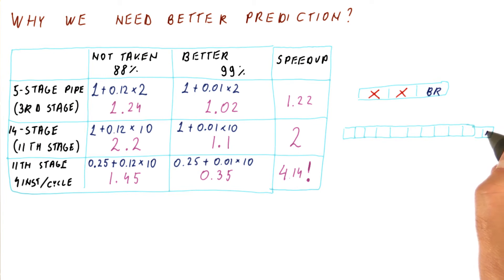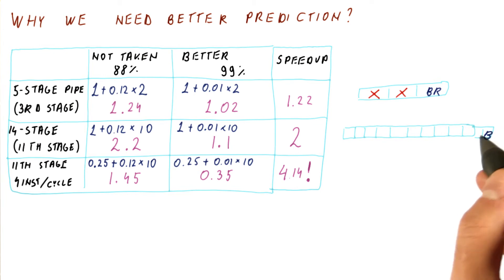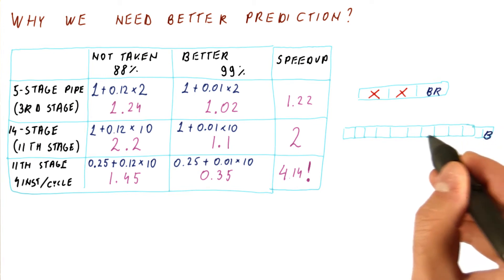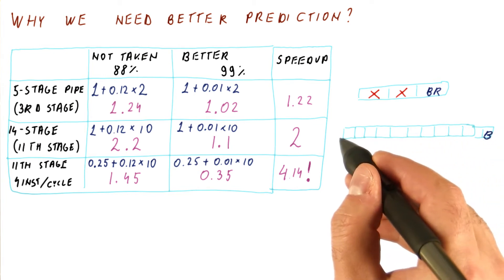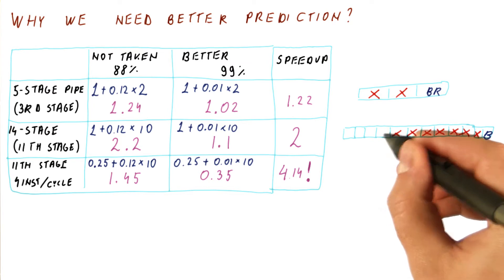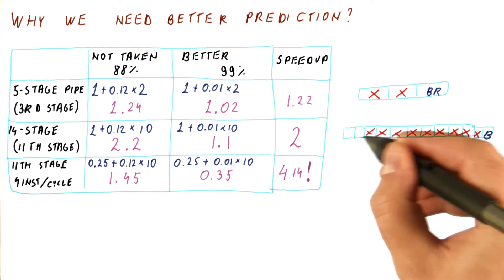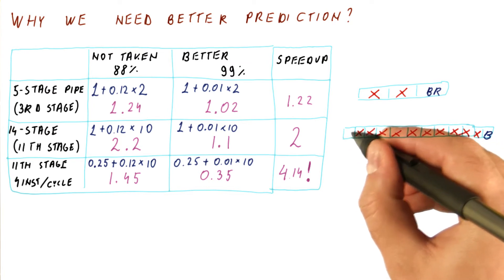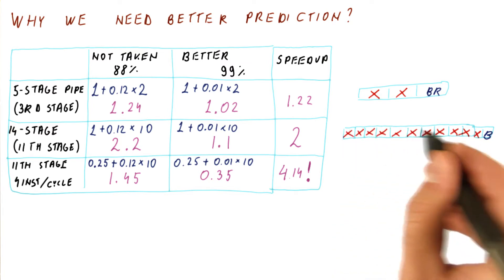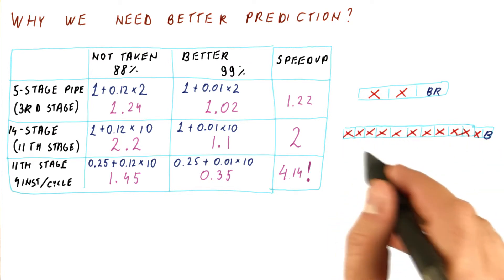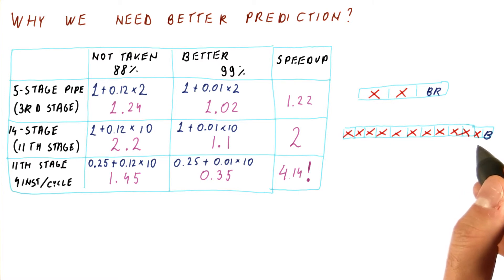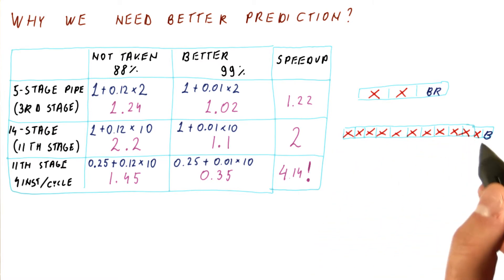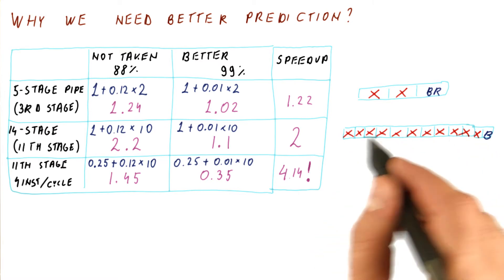In a deeper pipeline, we have our branch, and for ten cycles we have been fetching things. So a misprediction now costs us ten instructions worth of work. And that means that avoiding mispredictions becomes more important.